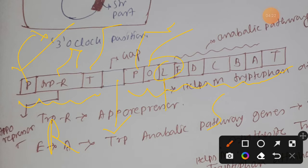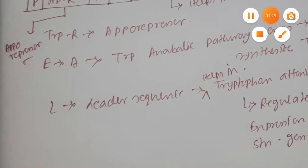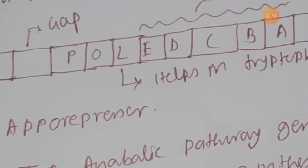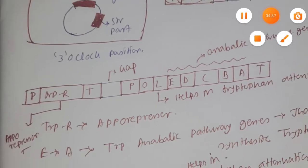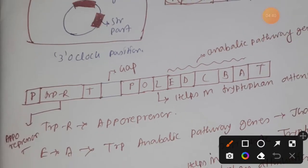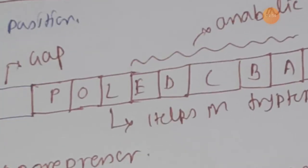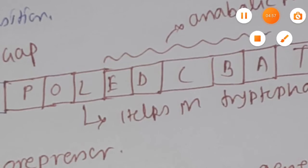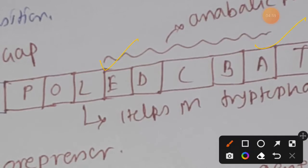The first gene we want to discuss is the leader sequence, also called the leader gene. This leader sequence will help the tryptophan operon in tryptophan attenuation — that is the regulation of the structural gene, which we are going to discuss in our upcoming video. Here we are just focusing on the introduction with the different genes.